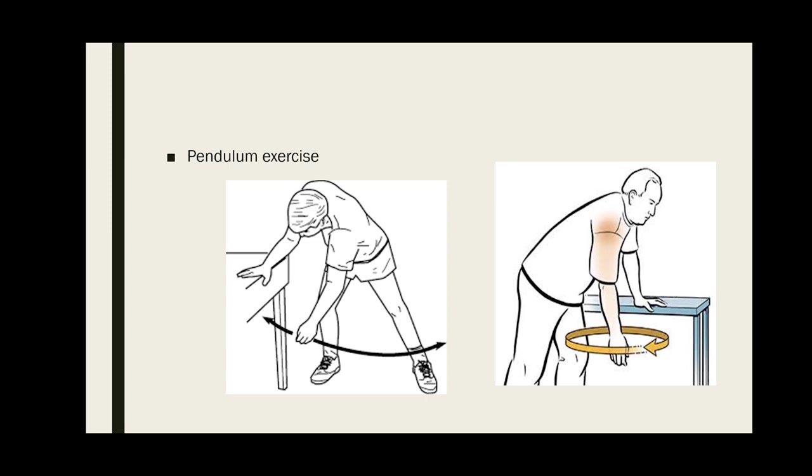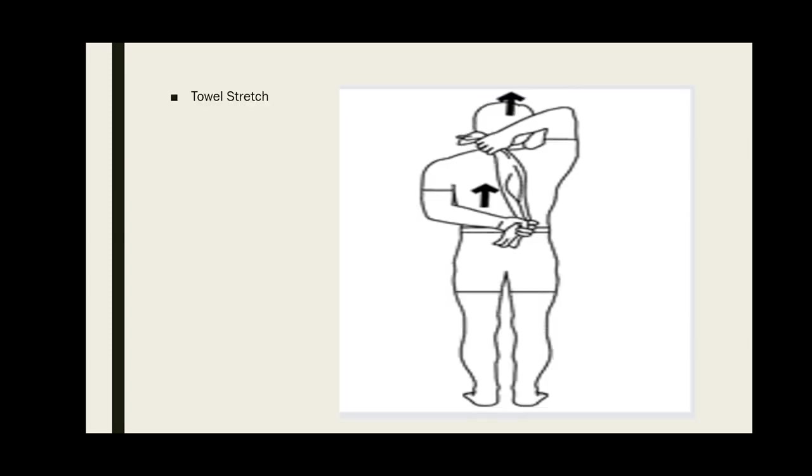Towel stretch: take a long towel like a bath towel or use a long belt. Place the painful arm behind the back on the lower side as shown. Hold the unaffected arm over the shoulder with the towel. Grasp the towel with the involved hand, slowly pull the towel upward with the uninvolved arm until a gentle stretch is felt in the involved arm. Hold for a few seconds, then relax and repeat for 10 to 15 rounds.